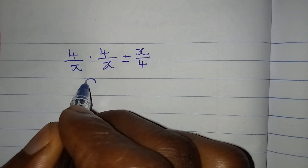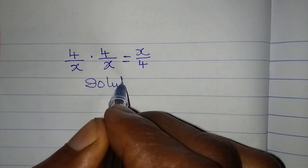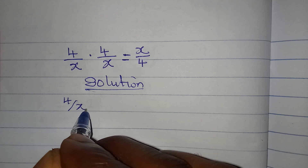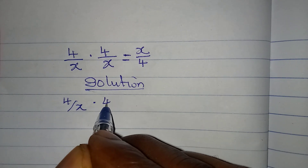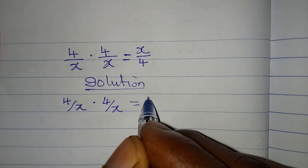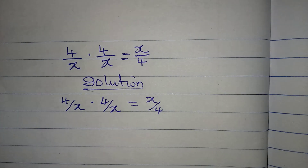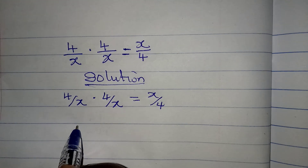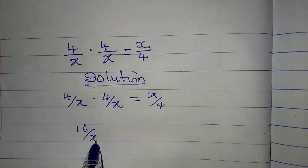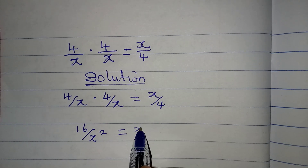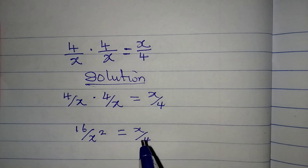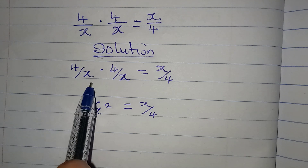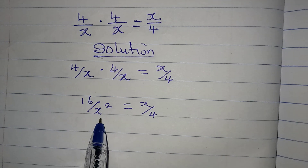Hello everyone. Let's provide the solution to this problem. We have 4 over x multiplied by 4 over x equal to x over 4. The first thing is to deal with the left-hand side so that we have 16 over x squared equal to x over 4. Remember we had 4 times 4 to give 16, and x times x to give x squared.